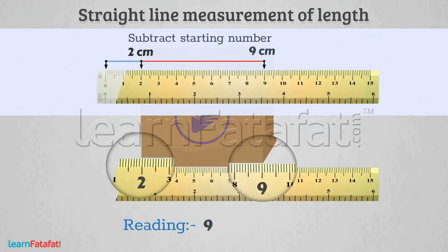So, 9 minus 2 is equal to 7. Therefore, the result of measurement is 7 centimeters.